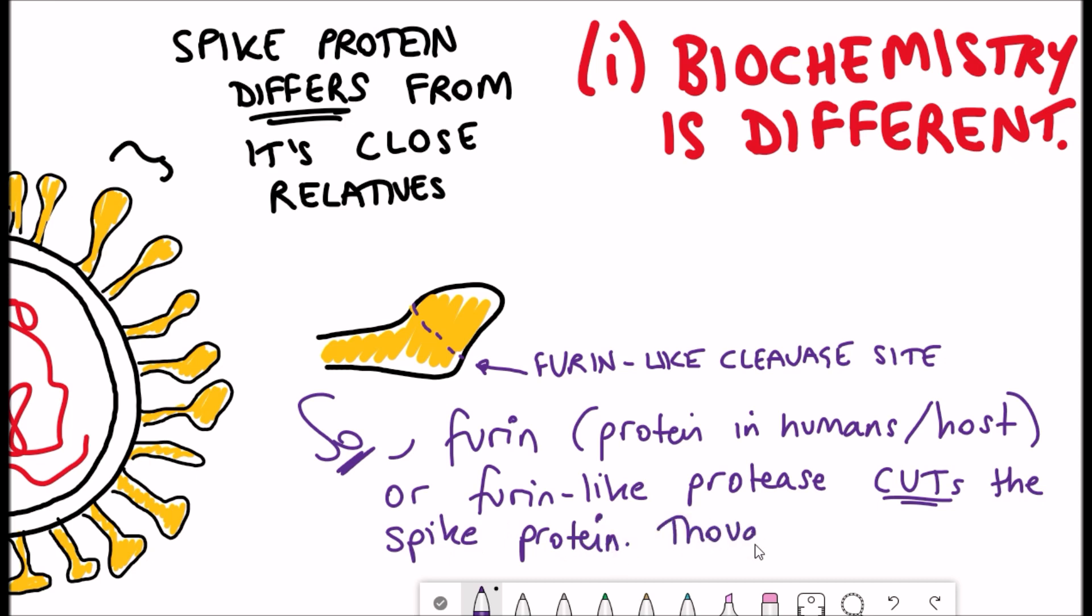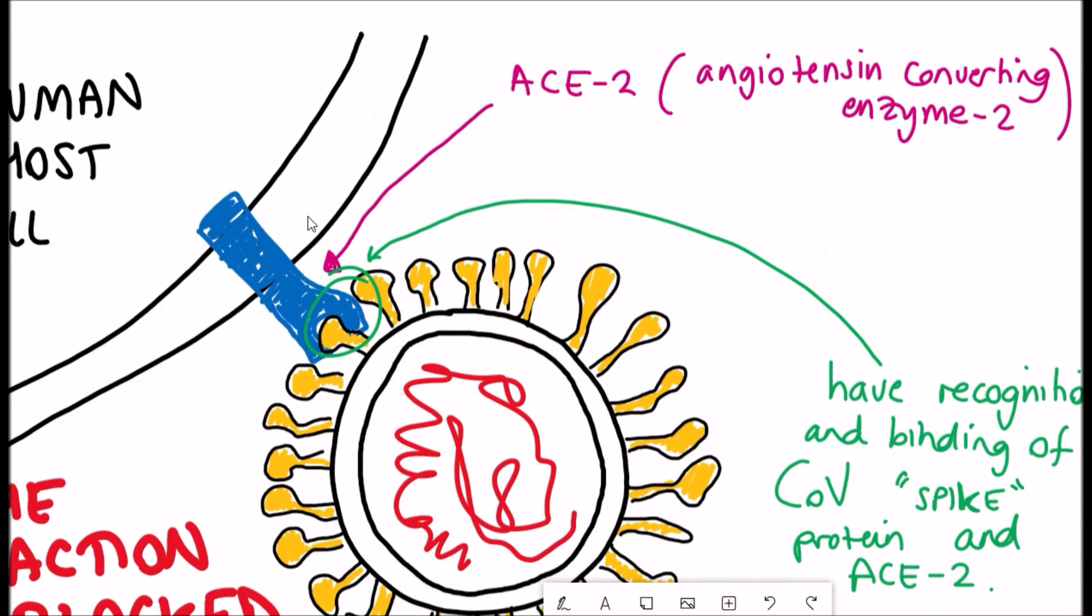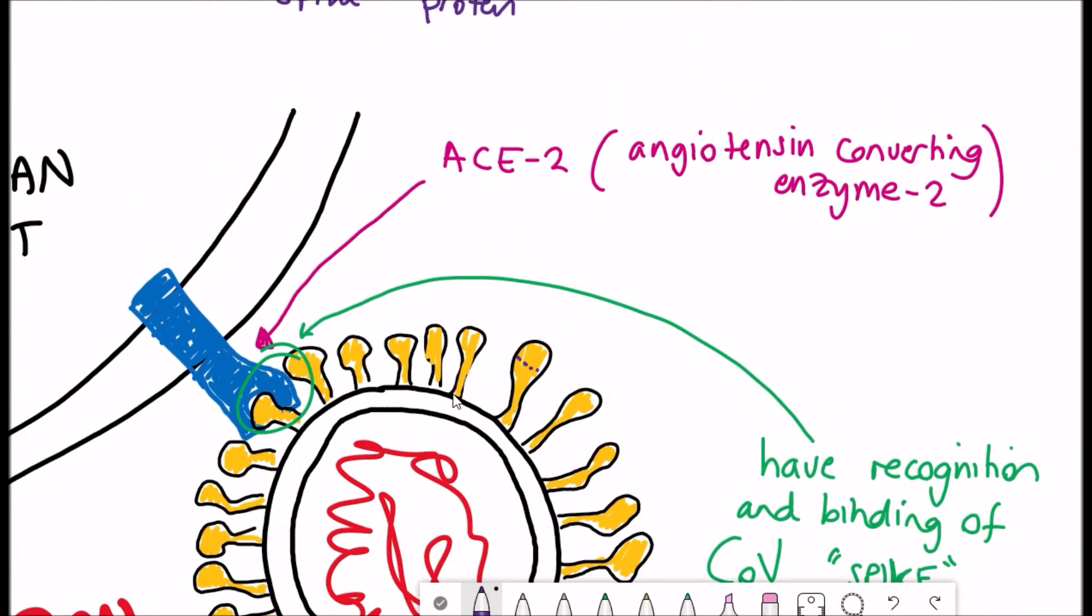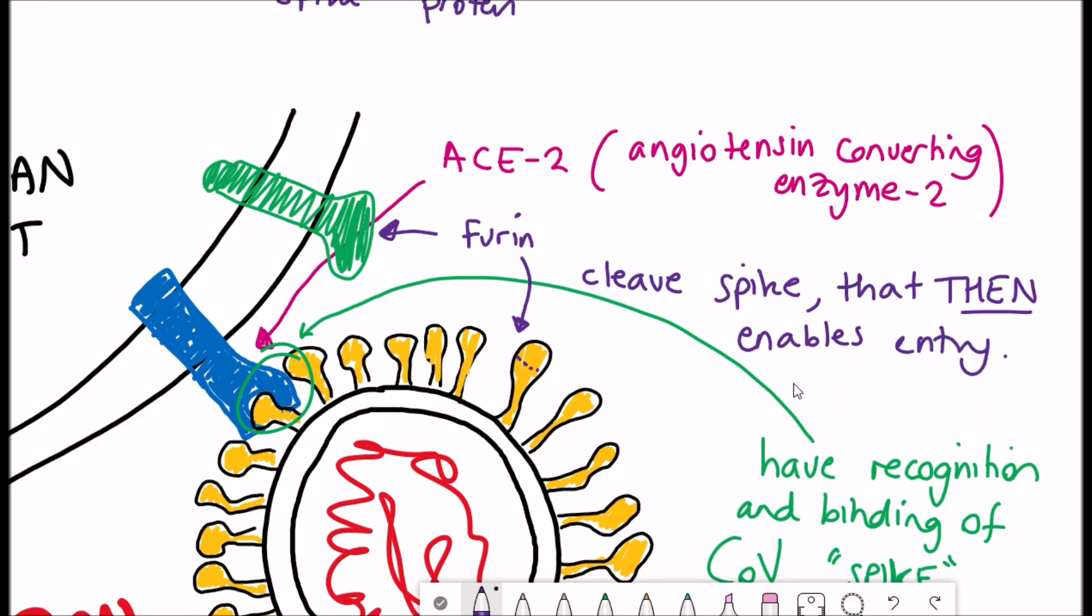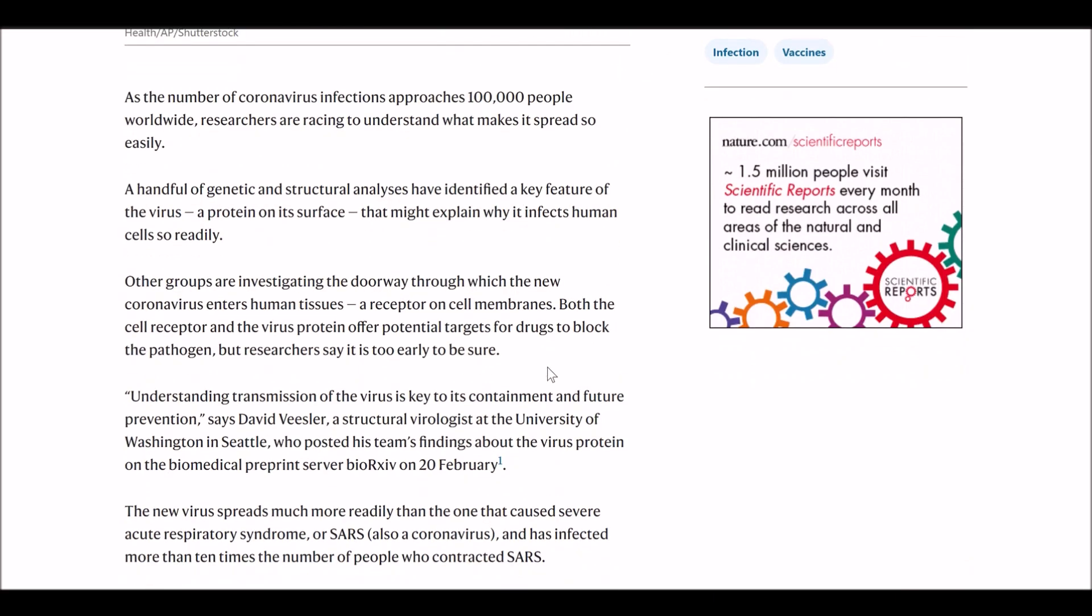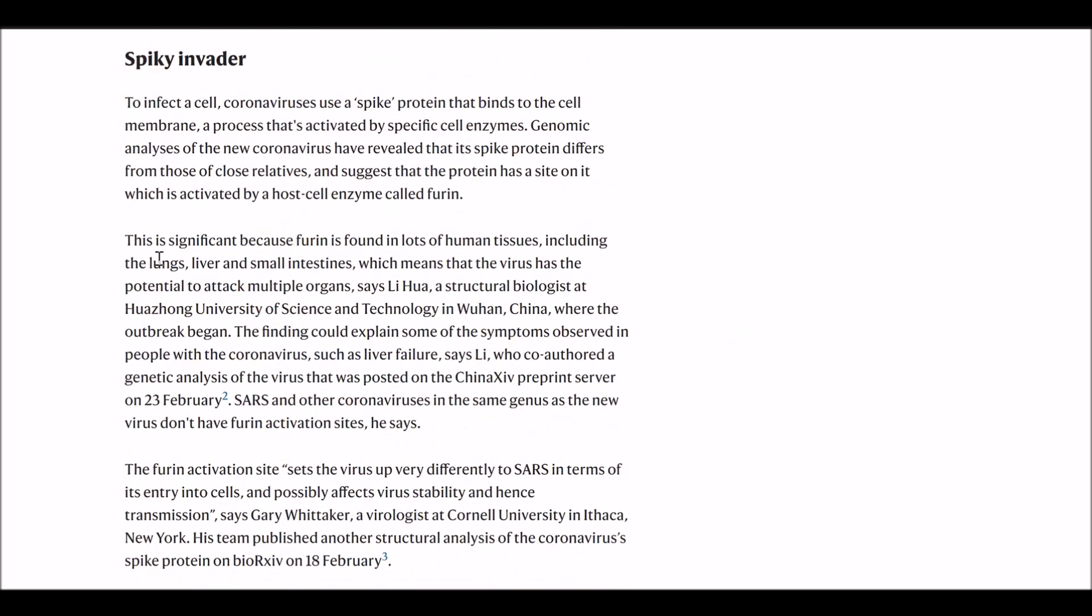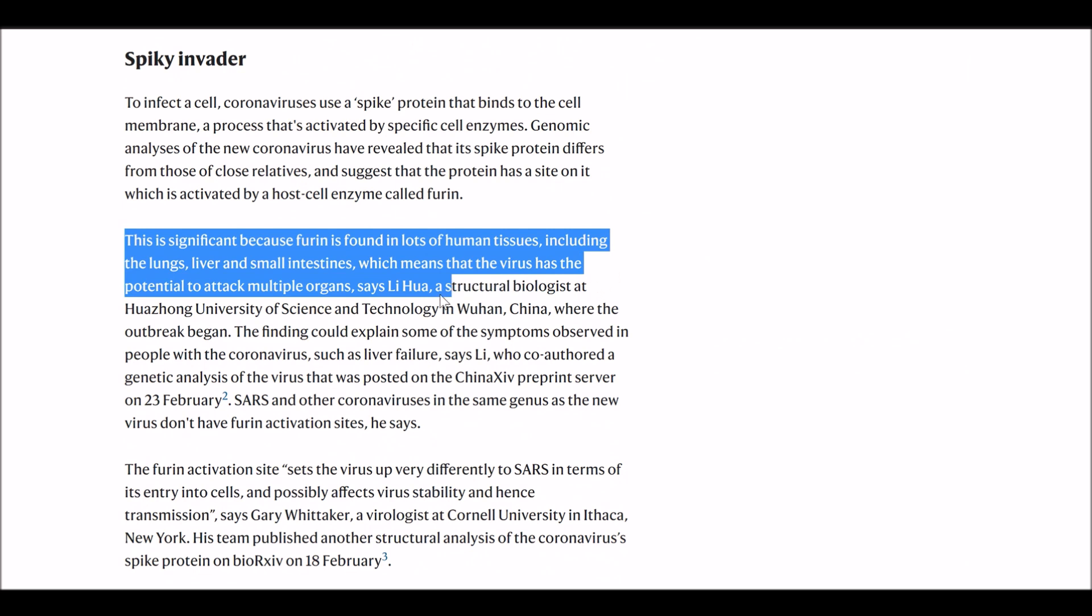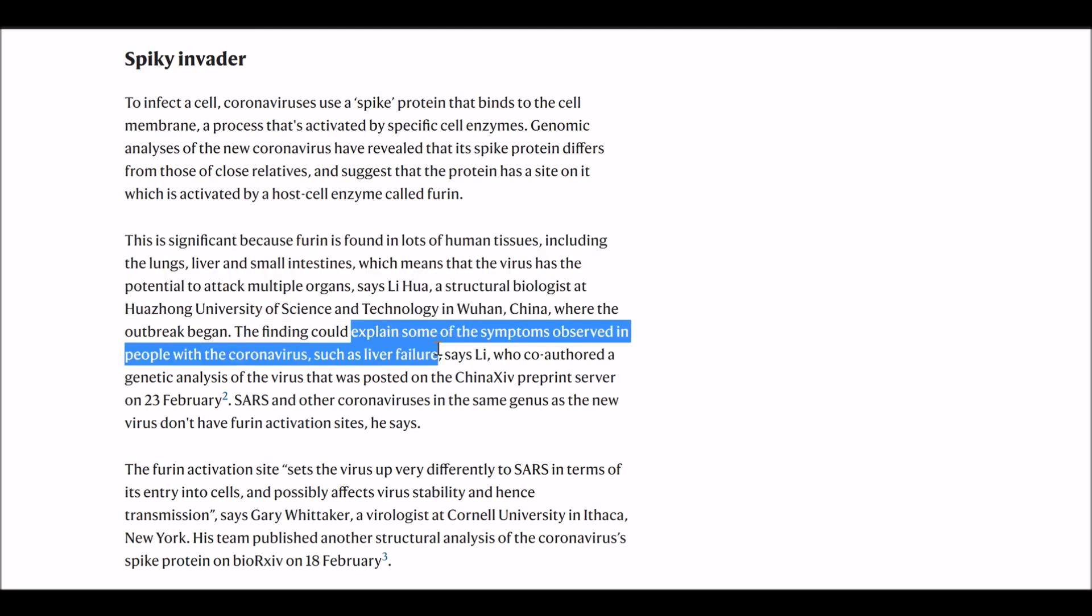And so either furin itself or furin-like proteases are now thought to cut the spike protein, which could further aid its activation and integration into the cells. And so I already mentioned that the spike protein recognizes ACE2, but it's now thought that cleavage by furin or furin-like proteins could also aid entry into the cell. And so whether this is important is really important to understand because furin is found in lots of different human tissues, including the lungs, liver, and small intestines, which basically means the virus is more likely to be able to attack these different organs. And it could also explain some of the symptoms that have been observed for people with the coronavirus, such as liver failure.